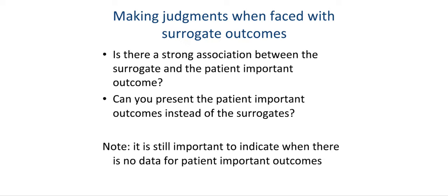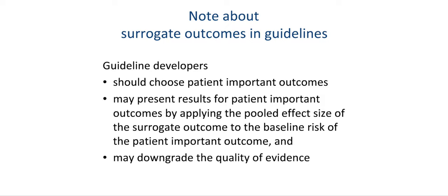Ideally, systematic review authors should focus on patient or population-important outcomes. If only surrogate outcomes are available, they must make judgments about the directness of the evidence and indicate clearly what surrogate outcomes have been used. An alternative option is to avoid surrogate outcomes altogether and provide information that patient-important outcomes were not addressed. For guideline developers, they should clearly choose patient-important outcomes. They may present results for patient-important outcomes by applying the pooled effect size of the surrogate outcome to the baseline risk of a patient-important outcome, and under those circumstances should downgrade the quality of the body of evidence.